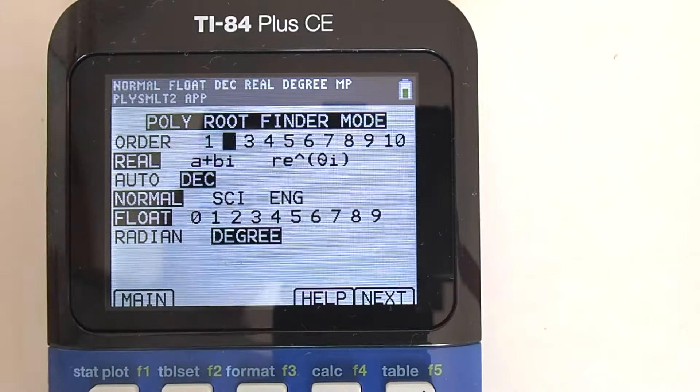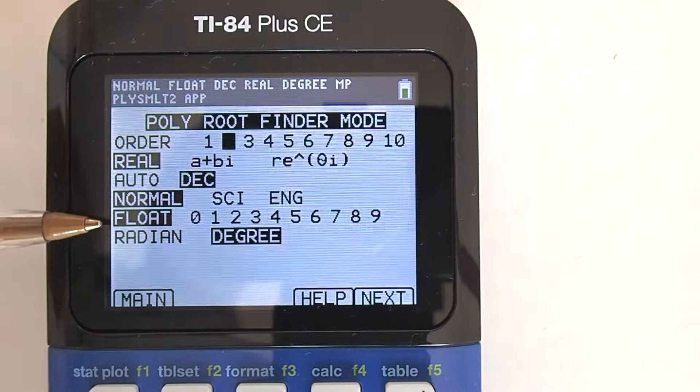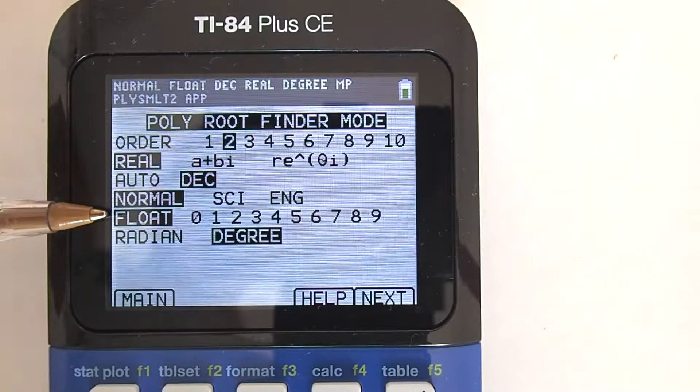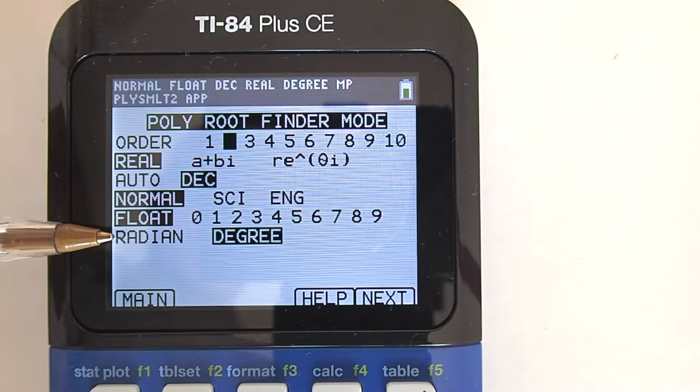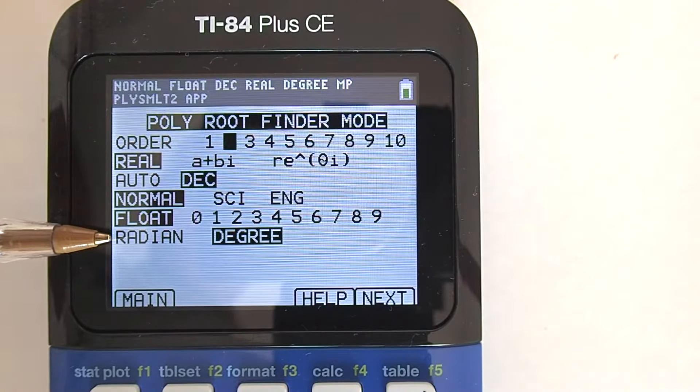The next line down is the float. Float is how many places past the decimal point you want your answer to display. The next line down is radian or degree. Keep it on the default setting of degree.